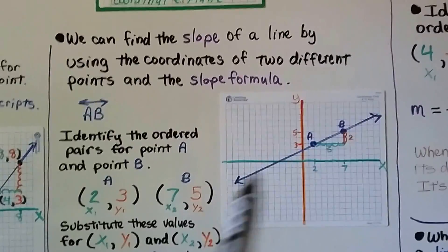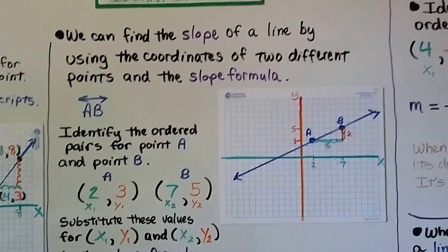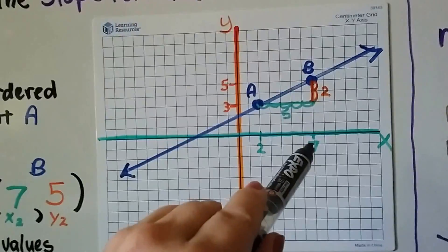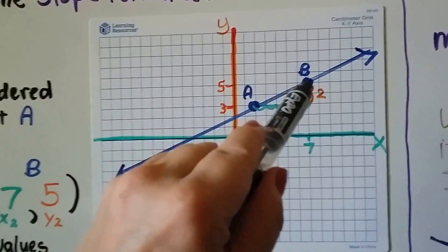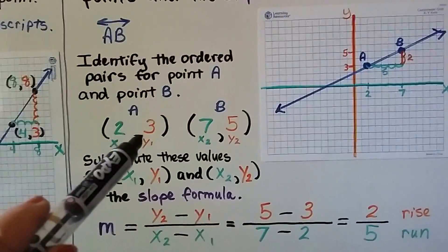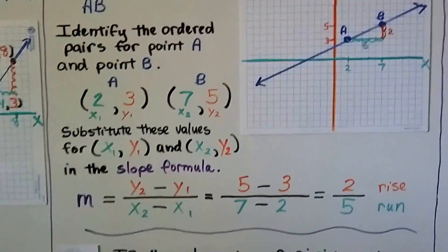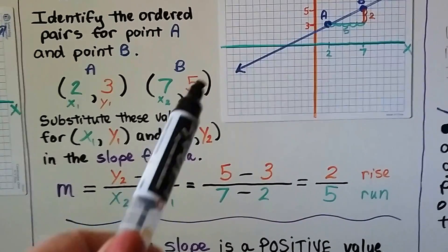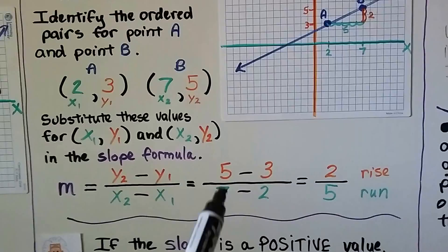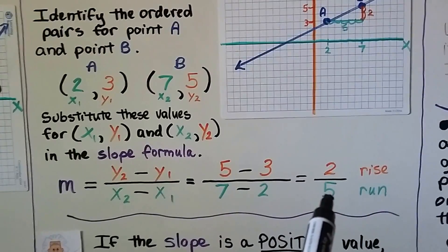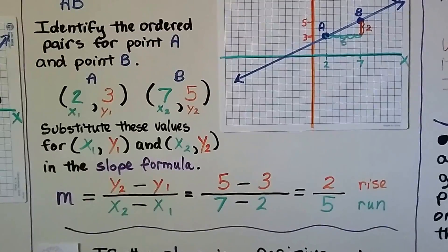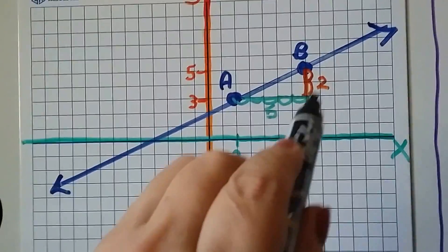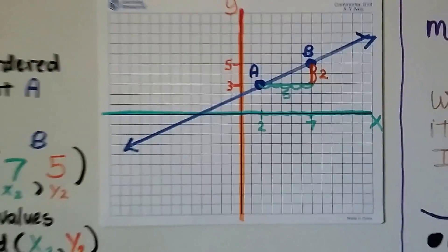So here we have line AB. Identify the ordered pair for point A and point B. So we look at our graph and we see that A is at 2 for x and 3 for y. And B is at 7 for x and 5 for y. So we have our x sub 1 y sub 1 and our x sub 2 y sub 2. We substitute these values into the slope formula and we end up with a 5 minus 3 and a 7 minus 2. That'll give us a rise of 2 over a run of 5. So our slope is 2 fifths. And we can even count them. Here's the rise. It's 2 squares. Here's the run. It's 5 squares. So we can even look at the graph and do it.